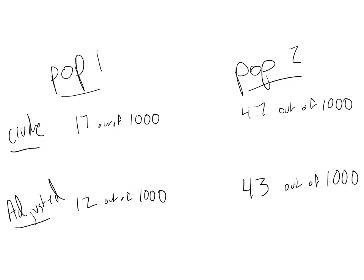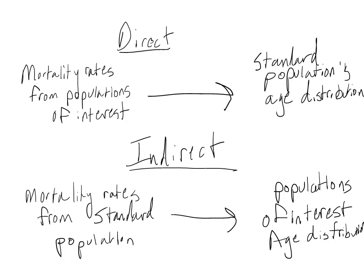We can then compare the adjusted mortality rates between the two populations. In this case, the differences between population 1 and 2 did not change much after adjustment for age, suggesting that the differences in mortality rate between the two populations are attributable to factors other than age. To summarize: for direct age adjustment, we apply the age-specific mortality rates from our populations of interest to a standard population's age distribution. For indirect adjustment, we apply the age-specific mortality rates from a standard population to the age distributions of our populations of interest.